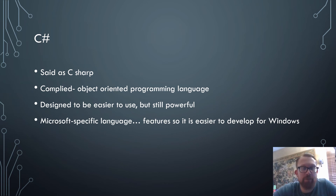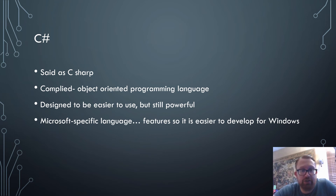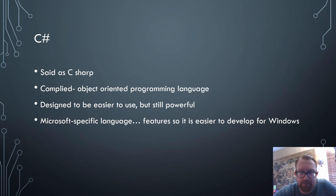C Sharp is a compiled, object-oriented programming language. It's designed to be easier to use but still powerful. It's a Microsoft-specific language, so it's easier to develop for Windows — C Sharp was built with Windows in mind.